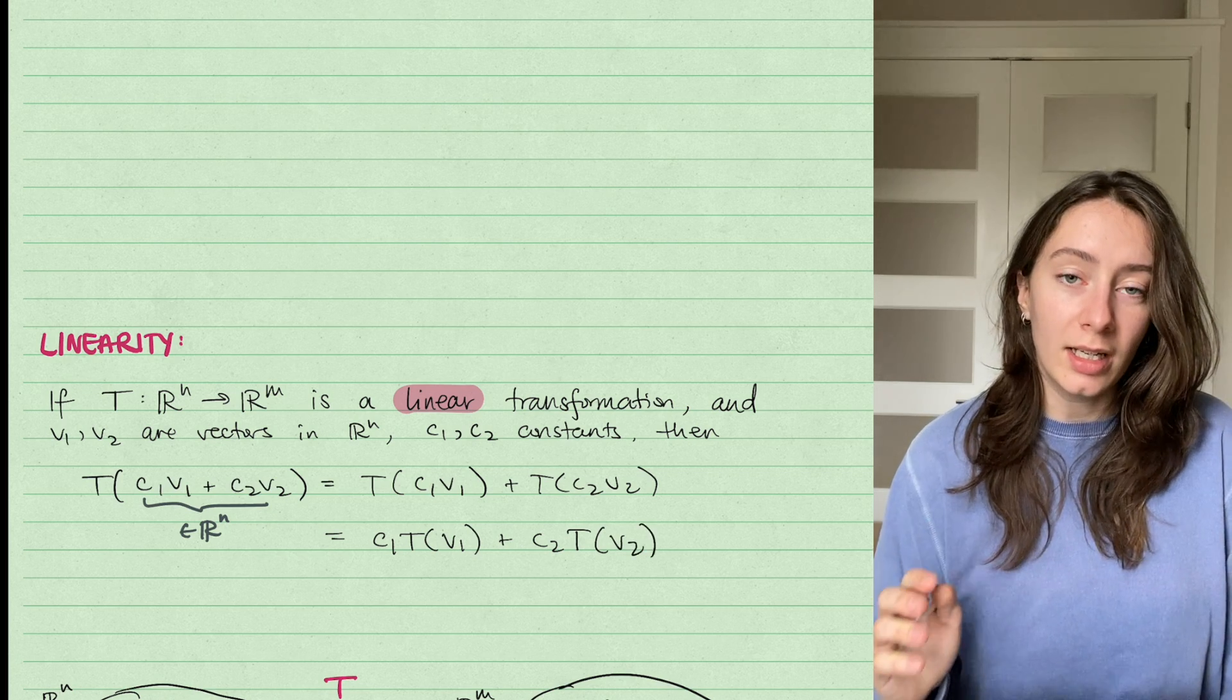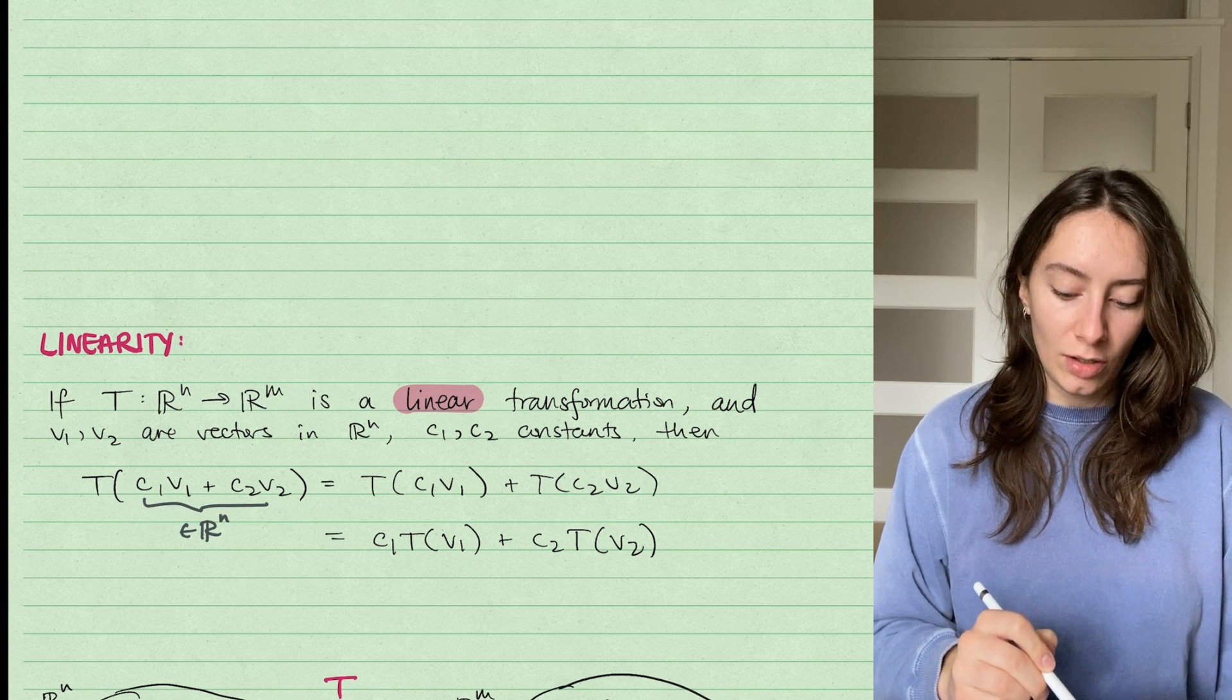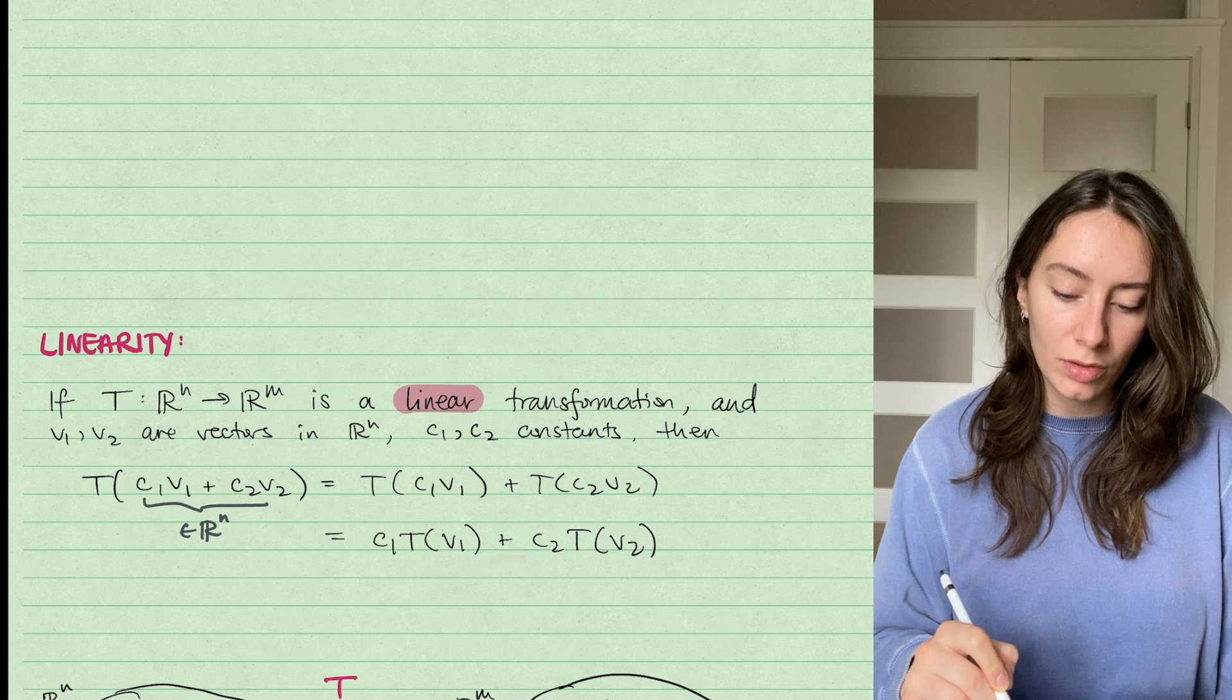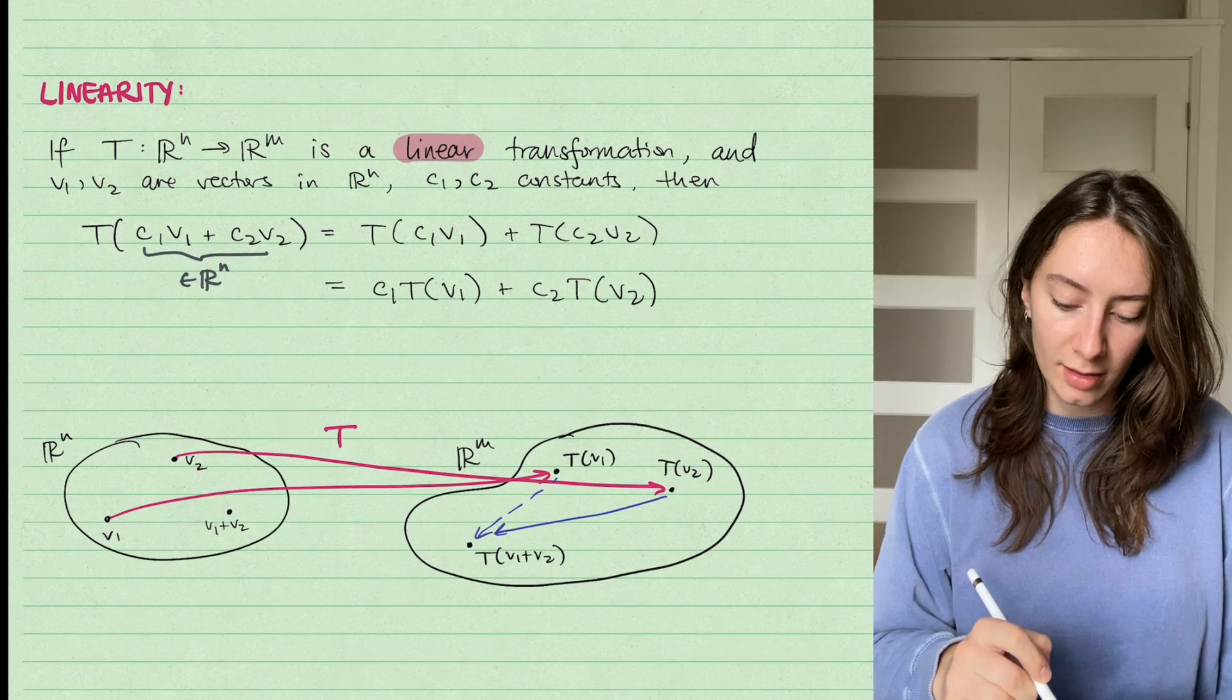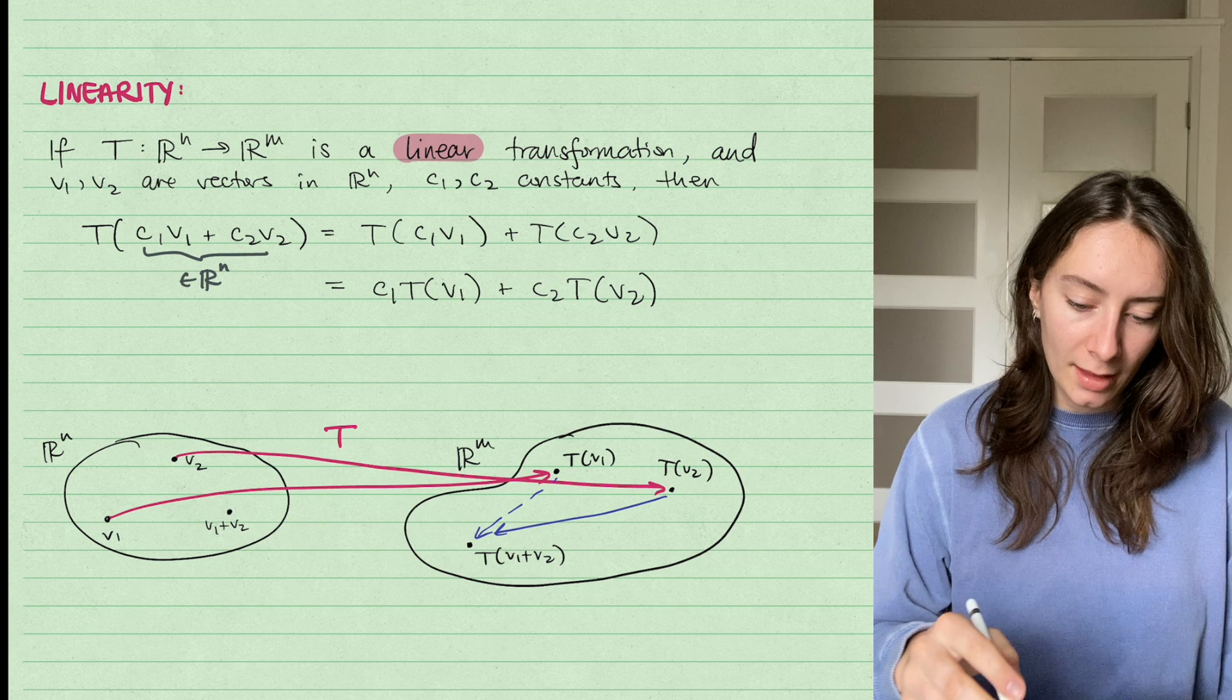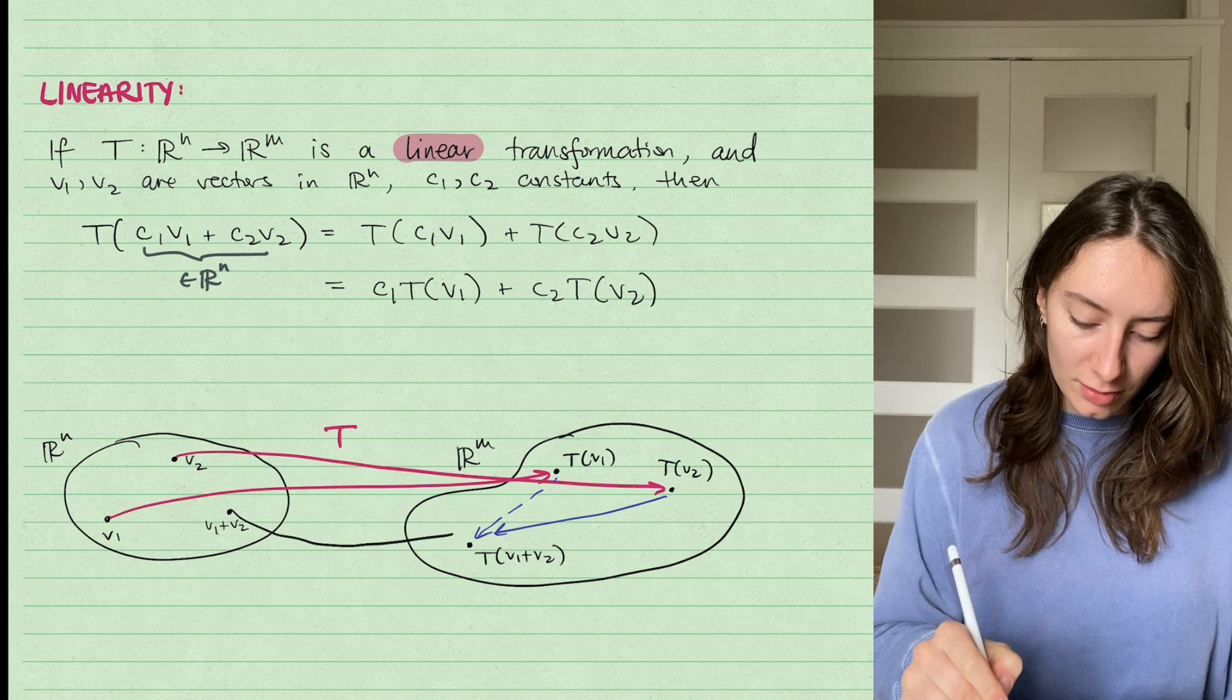So that's what linearity means. It means if you have a linear combination in the input space of your transformation, you could rewrite it, you can distribute the transformation across sums and through scalar multiplication. So here's a little picture that might help you understand. So if I have two vectors in my input space, and I look at their sum V_1 + V_2.